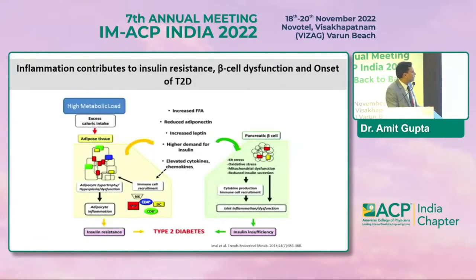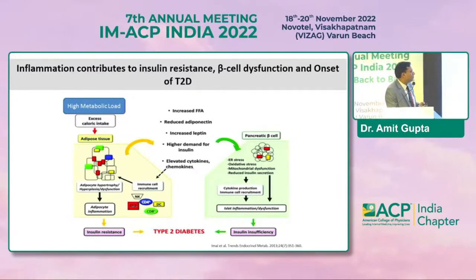In type 2 diabetes, there is a high metabolic load, excess calorie intake, changes in adipocytes — adipocyte hypertrophy, hyperplasia, and dysfunction — where immune cells are recruited, leading to adipocyte inflammation and insulin resistance. On the other side, increased free fatty acids, reduced adiponectin, increased leptin, and higher insulin demand place beta cells under stress, triggering cytokine production, immune cell recruitment, islet cell inflammation and dysfunction, and ultimately insulin insufficiency — a cascade leading to type 2 diabetes.